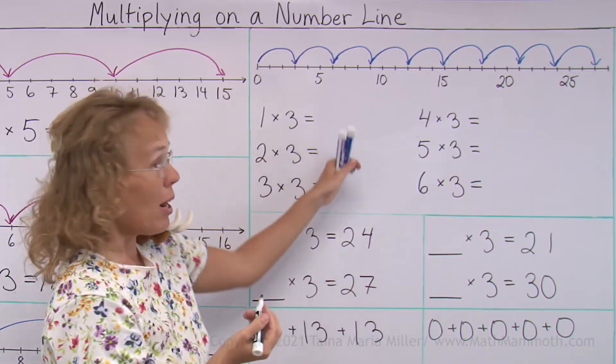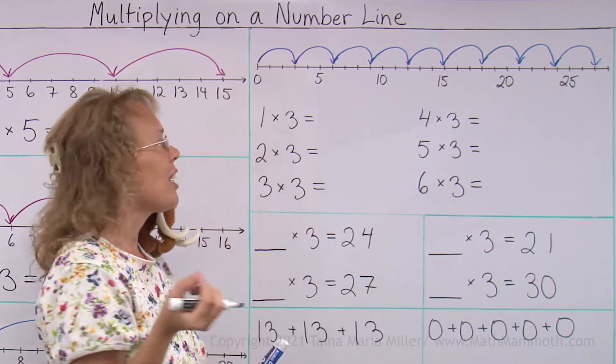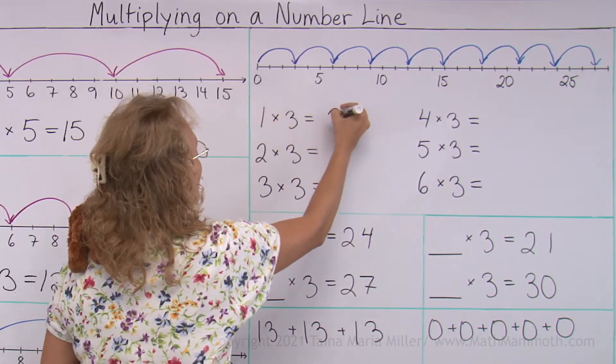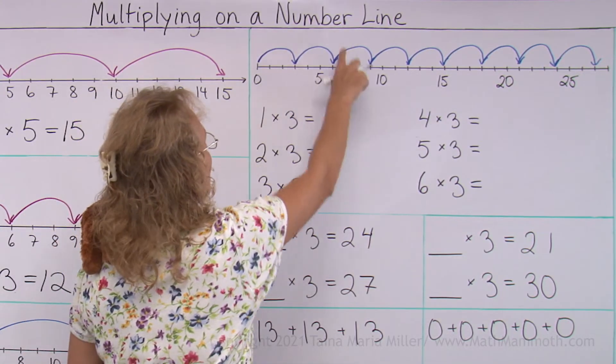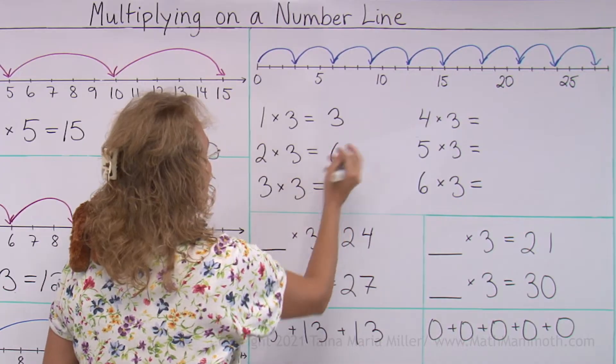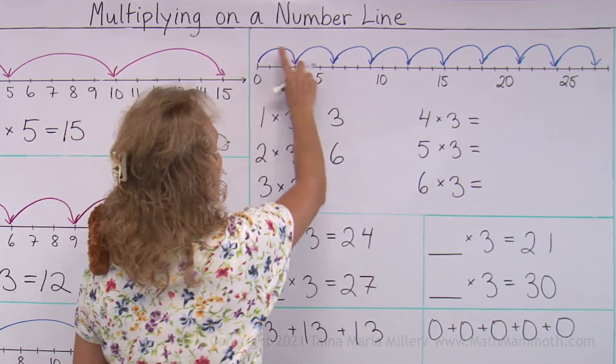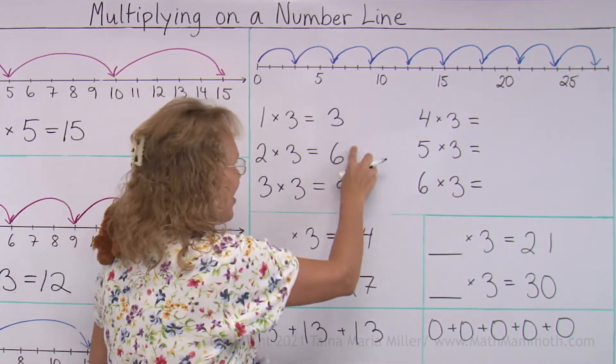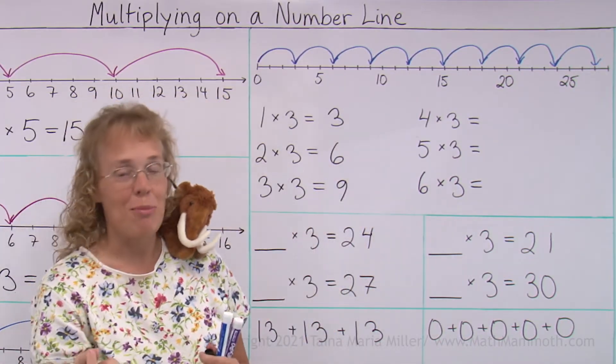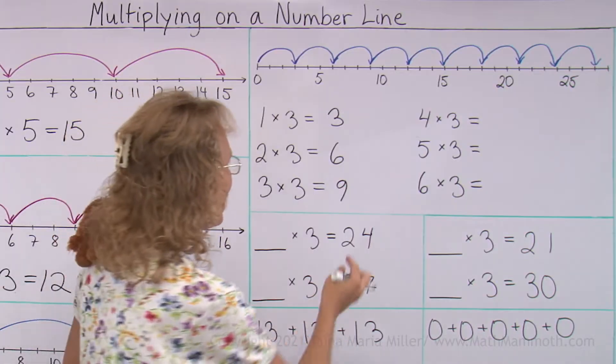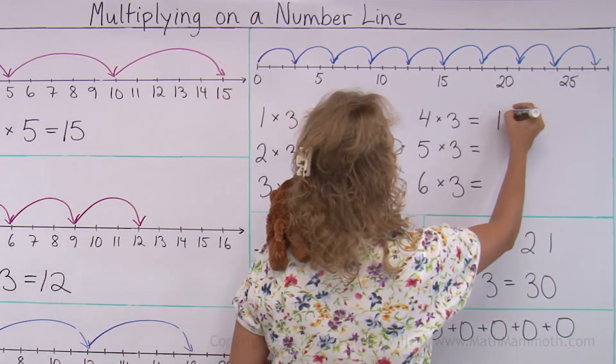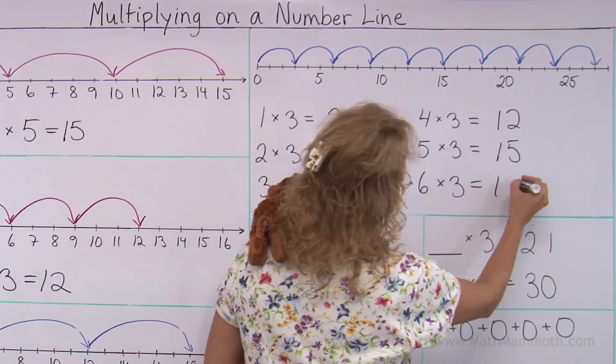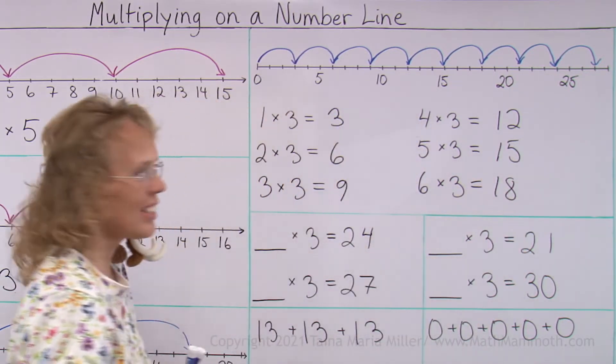And now we will write here part of the multiplication table of three. One times three was our first jump. We land at three. Two times three is our second jump. We land at six. And three times three, three jumps of three over here is nine. And of course you can here just add three each time. Skip counting by threes. So nine and three is twelve. Twelve and three more, fifteen. And fifteen and three more is eighteen. See? That's how it works.